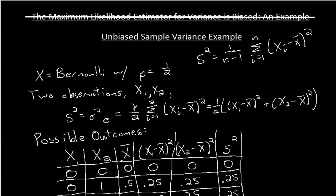I'm going to go through and modify things to show that's the case — similar to example 4.4.6 in the text. Before, I had 1 over N here, and N was 2 since I had two observations of a Bernoulli random variable. So I was multiplying by 1/2 before, but now I need 1, because 1 over (2 minus 1) is 1. So I'm going to erase the 1/2 factors and remove those parentheses.